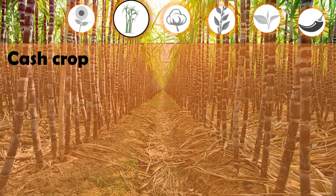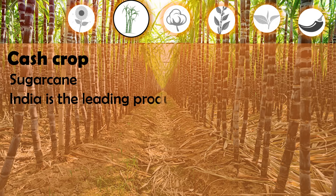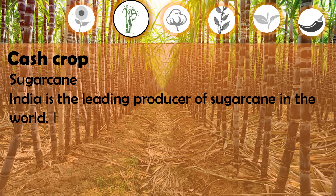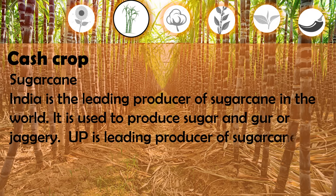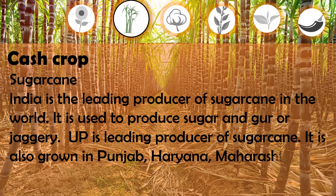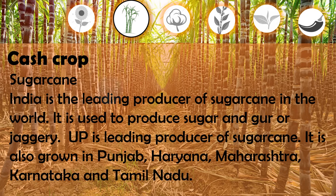India is the leading producer of sugarcane in the world. It is used to produce sugar and gur, or jaggery. Uttar Pradesh is the leading producer of sugarcane. It is also grown in Punjab, Haryana, Maharashtra, Karnataka, and Tamil Nadu.